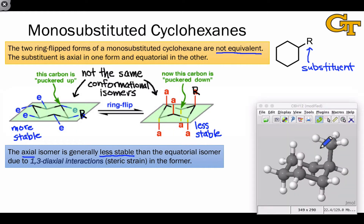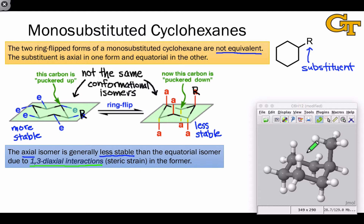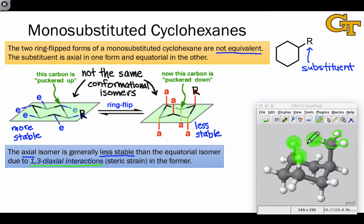Here's a molecular model of the axial conformer of methylcyclohexane. Notice that the axial substituent is relatively close to the other axial groups on the same side of the molecule. In this case, these are hydrogens. The two hydrogens here and here are relatively close to the atoms of the methyl group. As we've seen, the electron clouds around these atoms extend beyond the spheres that you see here.